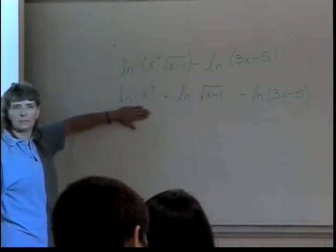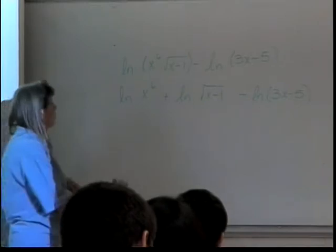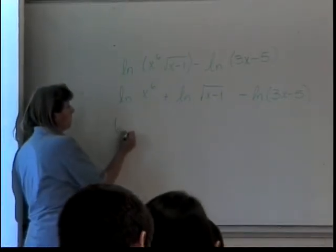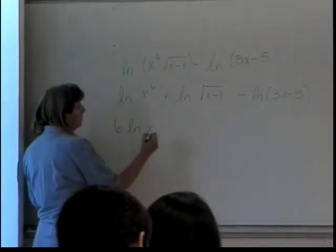Is this piece done? No, why not? Still has an exponent. The power rule lets me put that exponent out front. So I have 6 times the natural log of X.